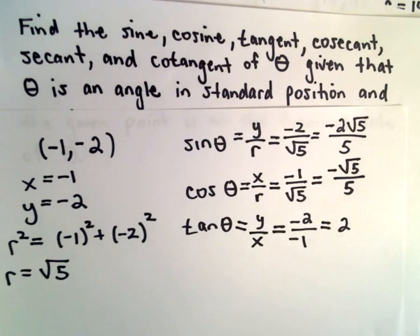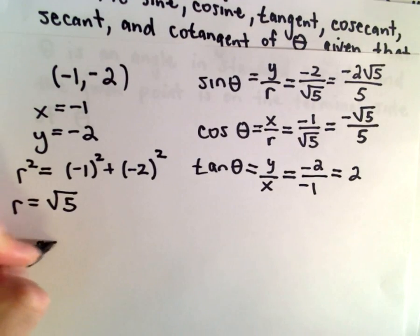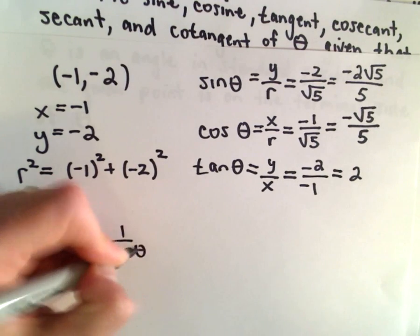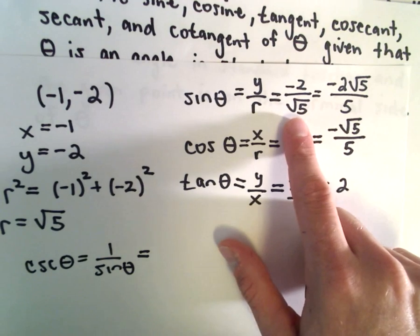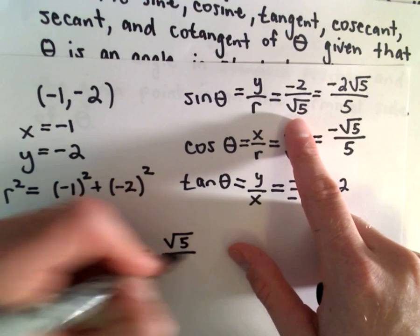And now to get the other 3 I'm just going to use reciprocals. So cosecant of theta, that's 1 over sine theta. And I use the value before we rationalize. I just flip that. I'll get the square root of 5 over negative 2.